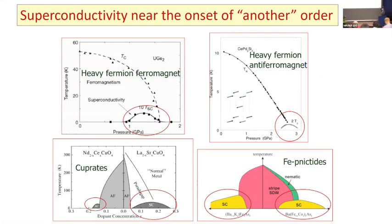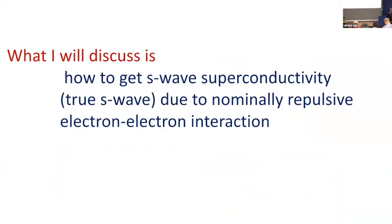The most prominent examples are probably in heavy fermion materials, where you can really see superconductivity emerging right near the very end of antiferromagnetic order. A little bit less prominent but also well-known is the example of superconductivity near the end of ferromagnetic order, and of course cuprates and nickelates with their magnetic order and potentially other orders, which are subjects of discussions here.